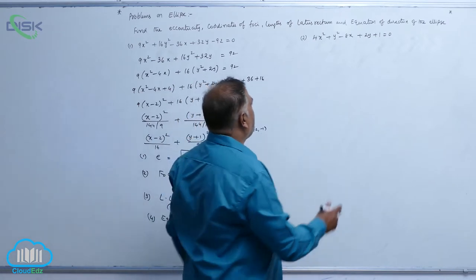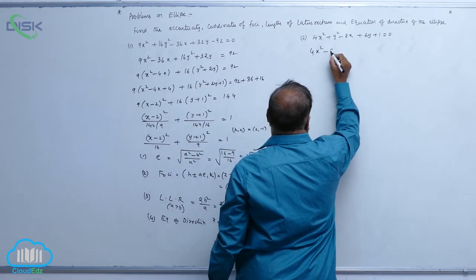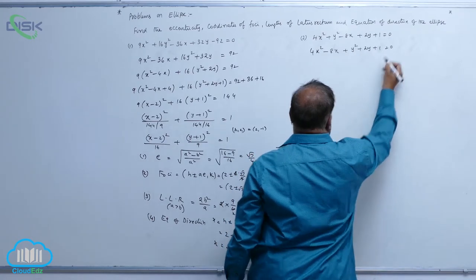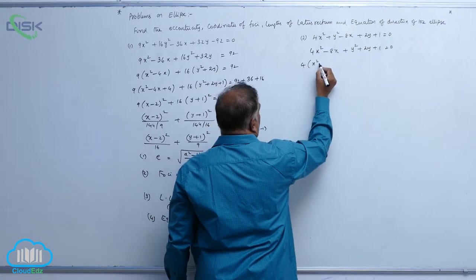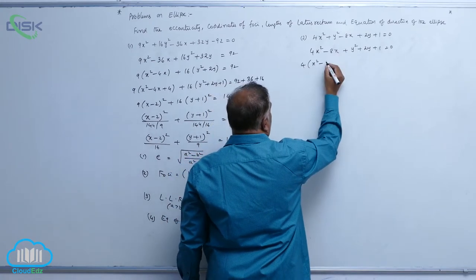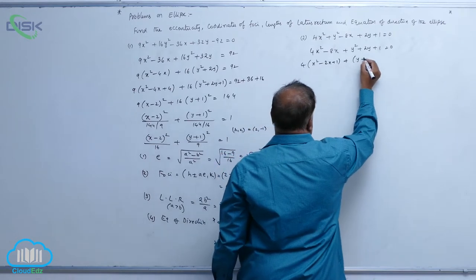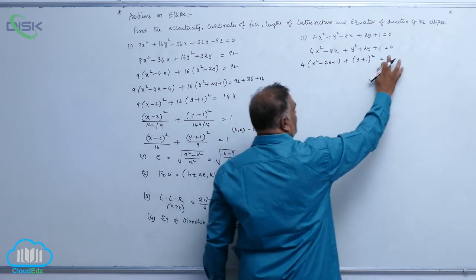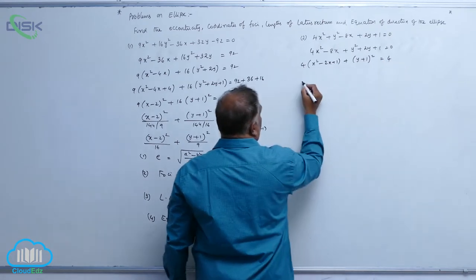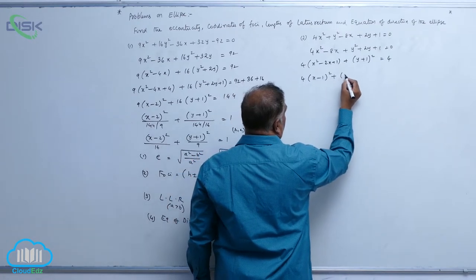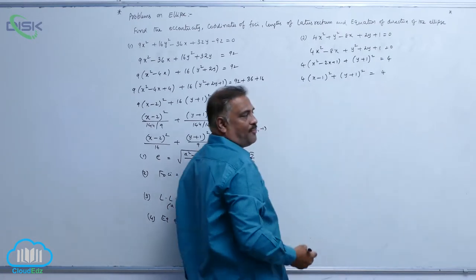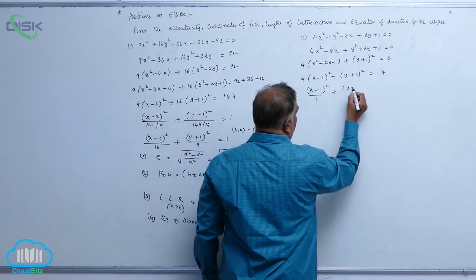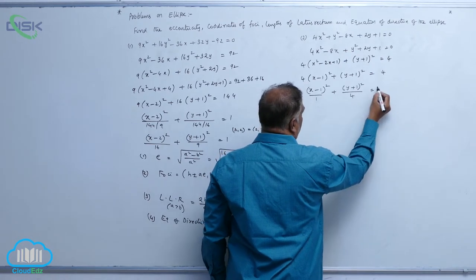Now let us come to one more equation. Here, 4x square minus 8x, y square plus 2y plus 1 is equal to 0. Take 4 common, x square minus 2x plus 1, plus y plus 1 whole square equal to 0. Now you are adding 4 here, so you must write 4 here. It is 4 into x minus 1 whole square, y plus 1 whole square is equal to 4. It is x minus 1 whole square by 1, plus y plus 1 whole square by 4 equal to 1.